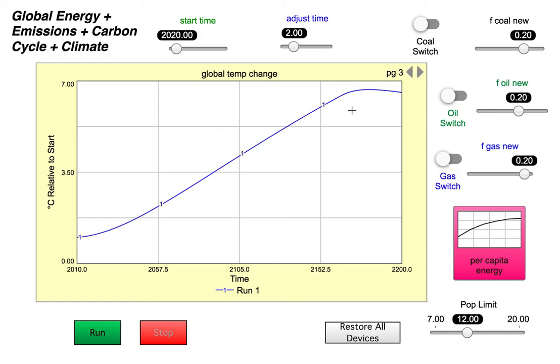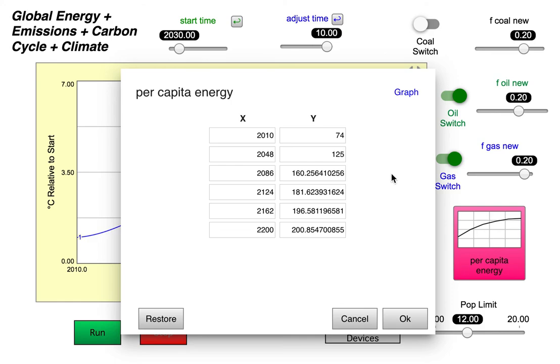Now we're going to follow the instructions for setting up the model. We're going to set the start time to 2030. We're going to set the adjust time to 10. We're going to turn on the oil switch and the gas switch. And we're going to keep the per capita energy at 74 the whole way across.